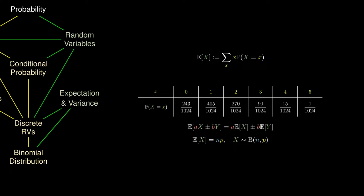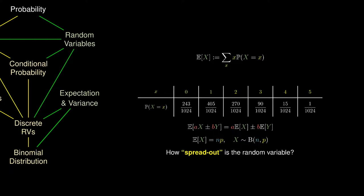But another interesting question would be to ask, how spread out is the random variable. We'll define this quantity variance of X, which is defined to be the average of the squared error of the random variable from its average. There's a more useful formula than this. This is calculated by taking the average of the squares subtracted by the square of the average.